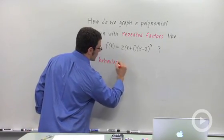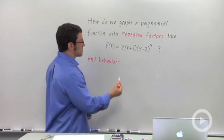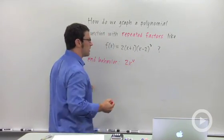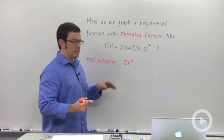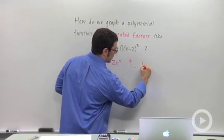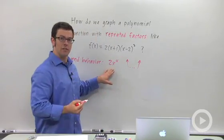For end behavior, you want to look at the leading term. And the leading term is going to be 2x times x cubed, 2x to the fourth. So if you were graphing a function like this, you would know that the two ends are going to go upward, just like 2x to the fourth does.